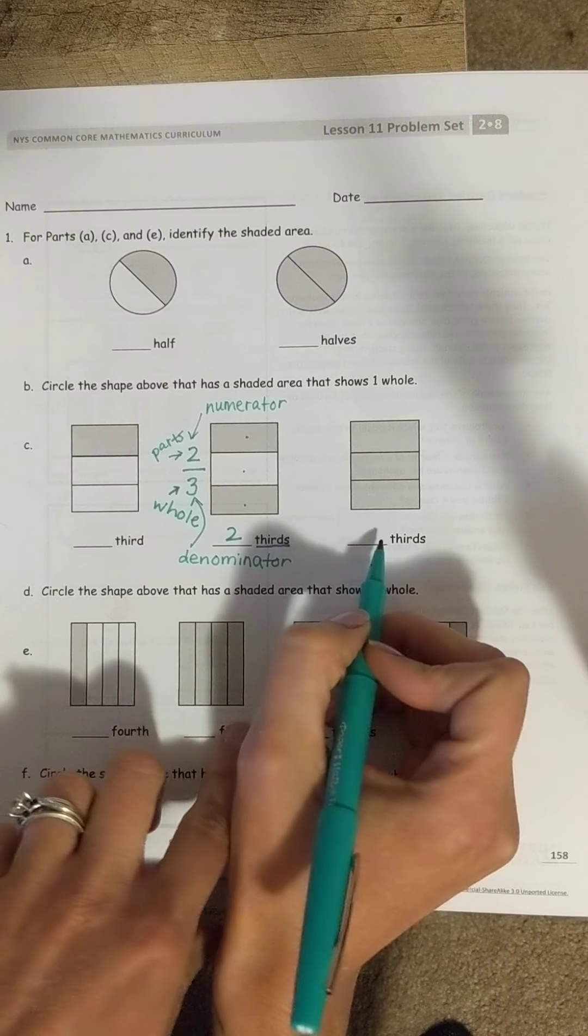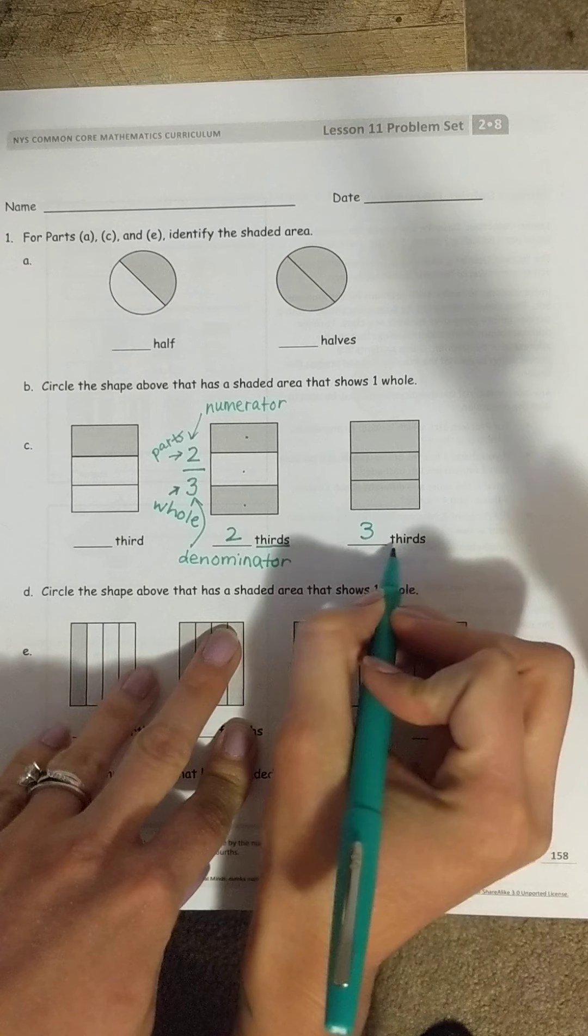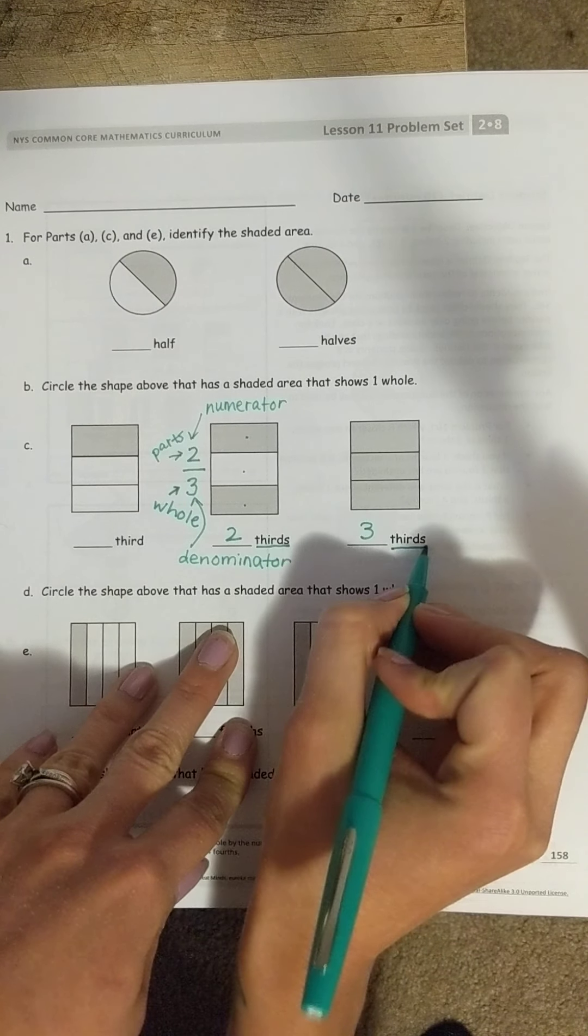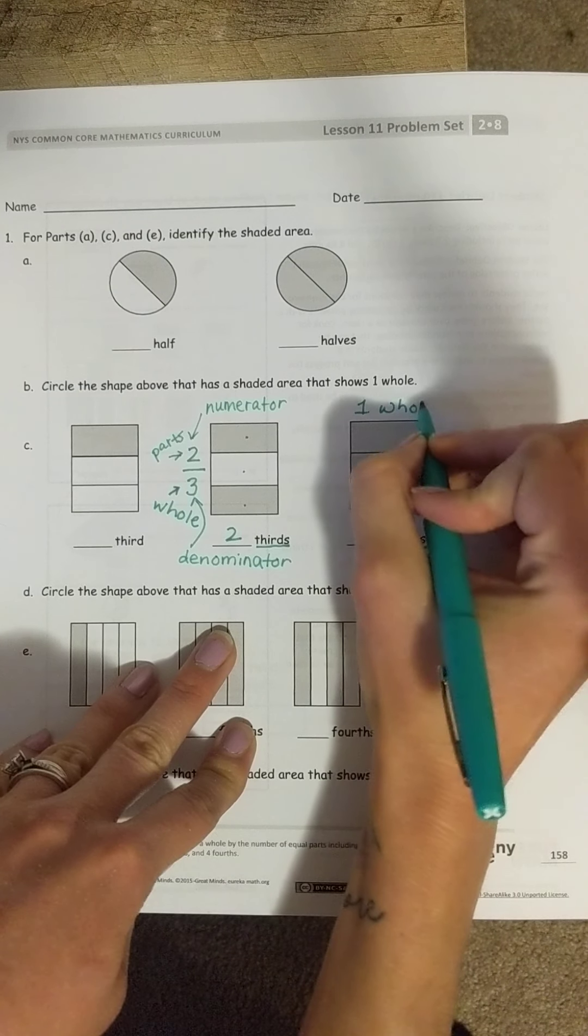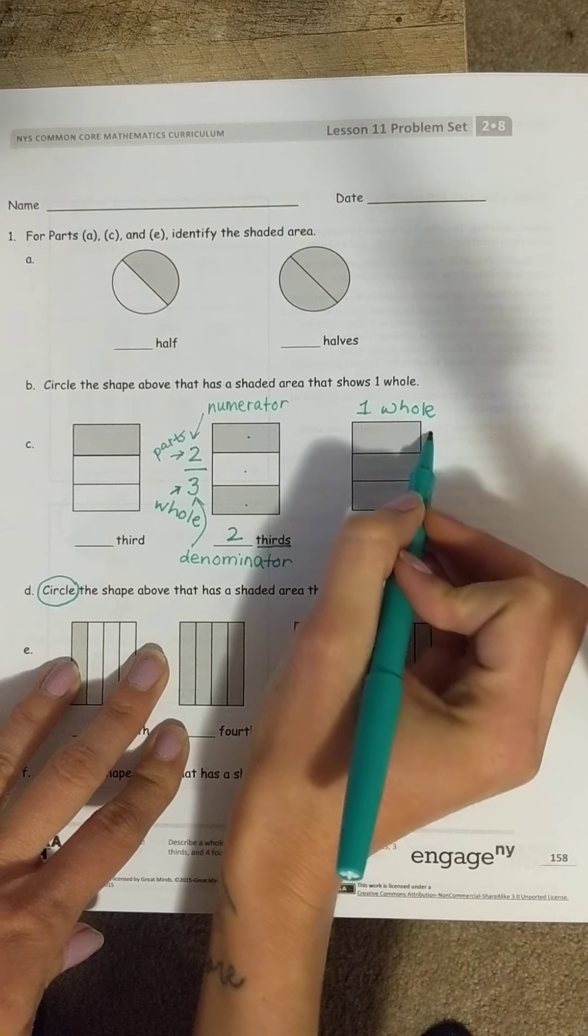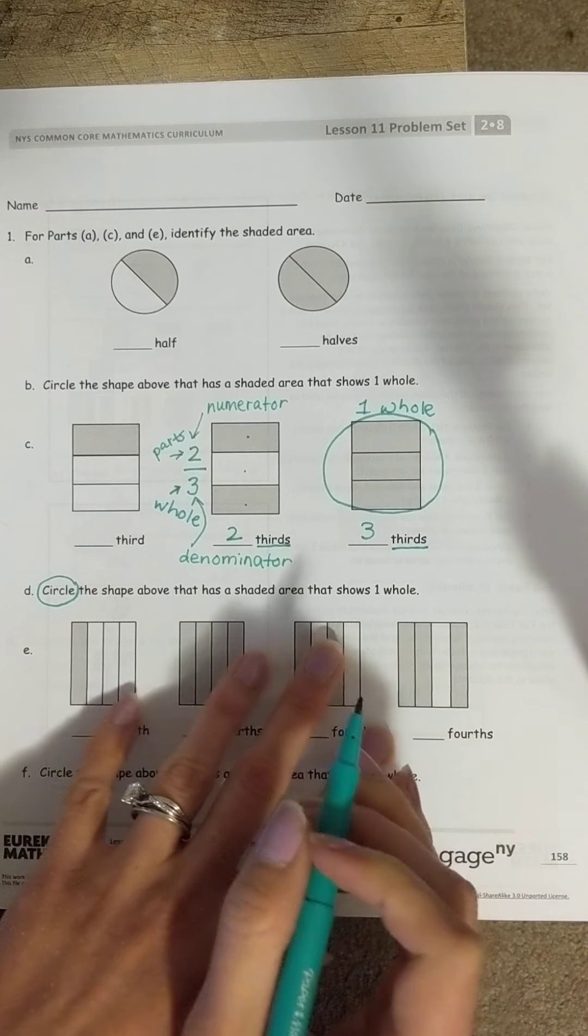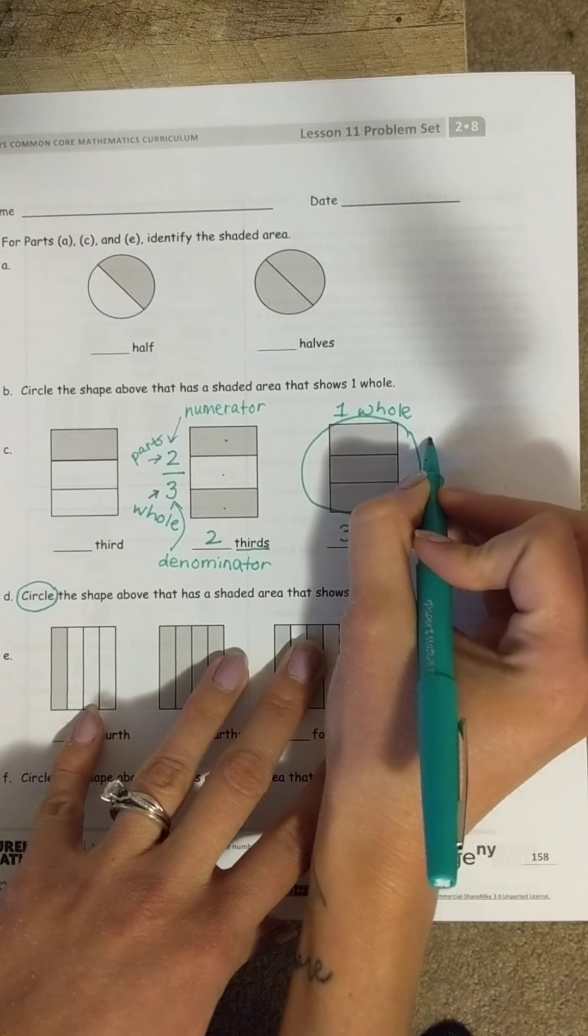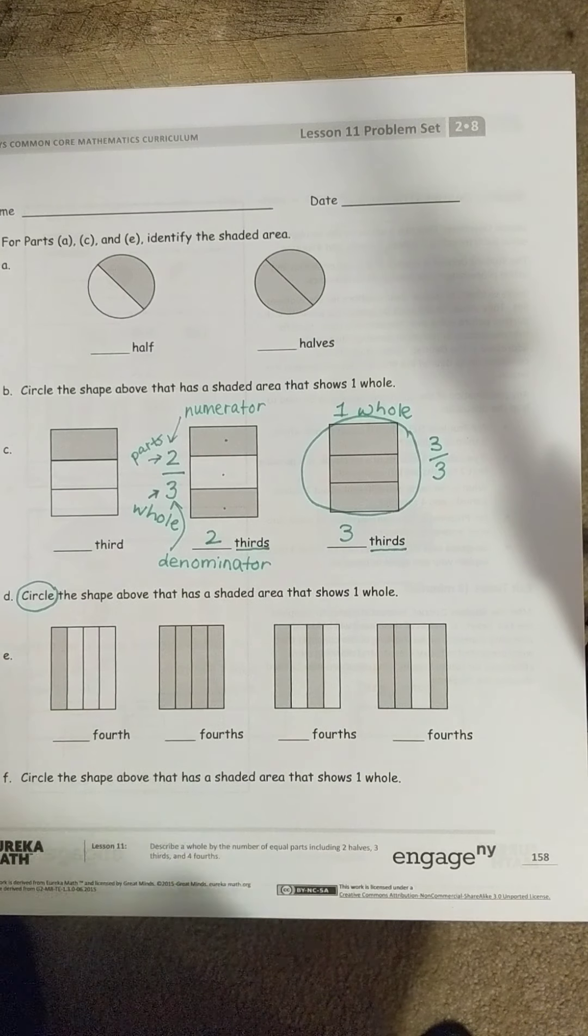I also know that means three out of all of the thirds are shaded in. So, I'm going to label this one as one whole. Well, I got to follow the directions too. It told me to circle it. Another way we would write that fraction is to say that three out of the three pieces are colored in or shaded.